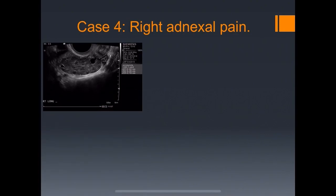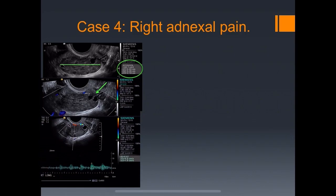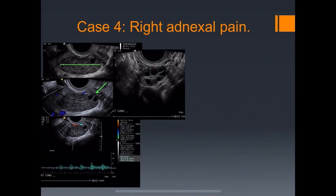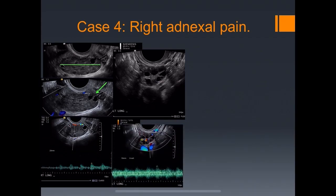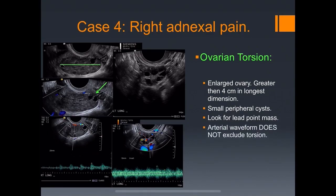Case four: right adnexal pain. The right ovary has a largest dimension of 4.4 centimeters with small peripheral cysts — pushed out due to edema within the ovary — and not much color flow. The arterial waveform is very peripheral. Compared to the left side, which has a more typical ovarian appearance with more exuberant flow. We suspected ovarian torsion, which it turned out to be. Enlarged ovary greater than 4 centimeters in a single dimension raises suspicion. Importantly, an arterial waveform does not necessarily exclude torsion. The patient will often be exquisitely tender on the side of the torsion.